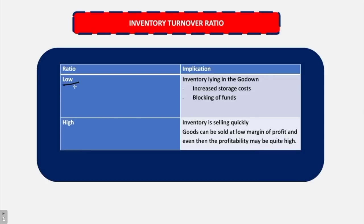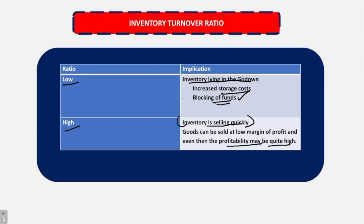What does the inventory turnover ratio teach us? If the ratio is low, it means the denominator is much more than the numerator — we have a lot of inventory in the godown, which means storage costs are going to increase and funds are blocked in inventory. If the ratio is high, it means that inventory is being sold quickly. Goods might be sold at a low profit margin, but profitability might be very high because we are not spending a lot on warehousing or blocking of funds.